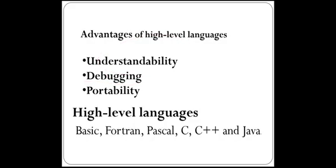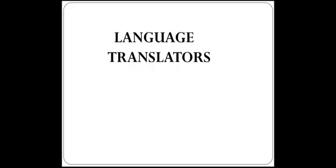A few examples of high level languages are Basic, FORTRAN (that means formula translation), Pascal, C, C++, Java, and Python. Since a computer understands only binary language, we also need a translator here. The language translators are compiler and interpreter. A compiler executes the whole program in one go and then reports errors, whereas an interpreter executes the program line by line. So these are a few language translators.